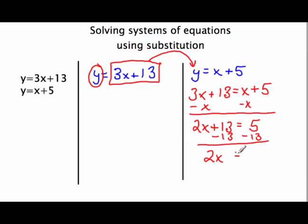2x equals negative 8. And so when we divide by 2, x equals negative 4. We've now found half of our solution.